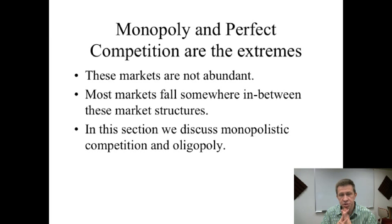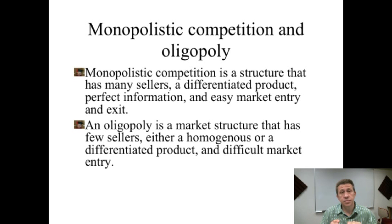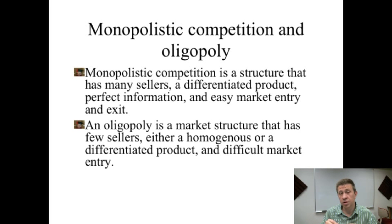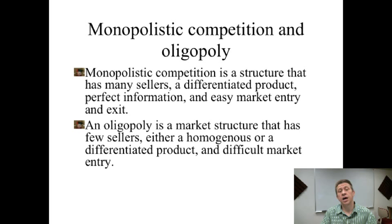In this section we're going to cover two different market structures: monopolistic competition and oligopoly. Monopolistic competition has many sellers, perfect information, and easy market entry and exit — just like perfect competition. However, we no longer assume an identical product for all firms; now we assume products are slightly differentiated. Oligopoly is quite different: we assume few sellers — not one, not many, but a few — the product can be identical or different, and market entry is difficult, though not impossible.